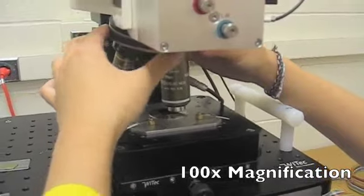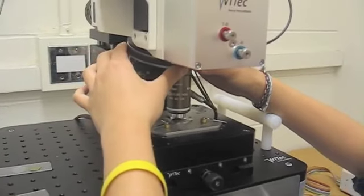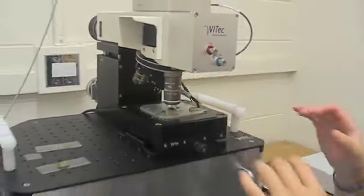Here we are switching to 100x magnification. Now you can see the difference between multiple layers and single layers. The single layers are almost transparent, while the multiple layers are thicker and dark brown.